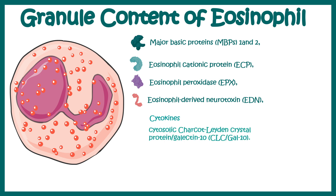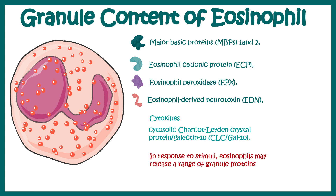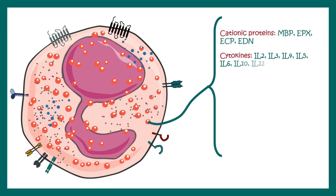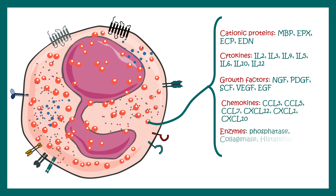Other than that, there are cytokines and CLC-Gal-10 protein, and in response to many stimuli these contents are actually released. These four major proteins are really important in terms of Eosinophil's function, as we will understand in subsequent slides. In addition, various interleukins, growth factors, chemokines, and enzymes are also secreted by Eosinophils.